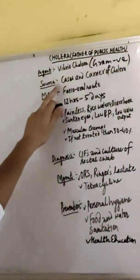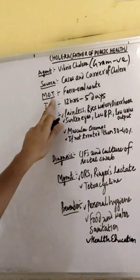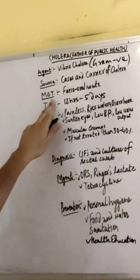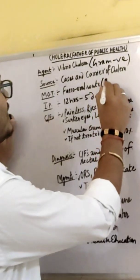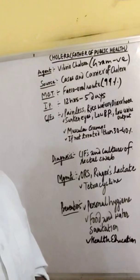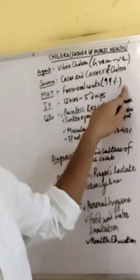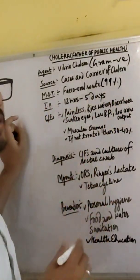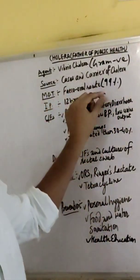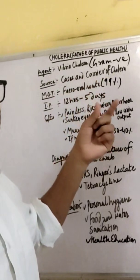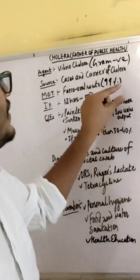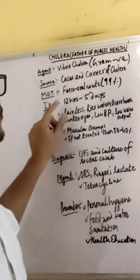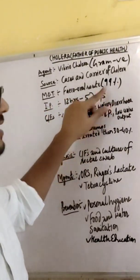The source is cases and carriers of Cholera. The main mode of transmission is the feco-oral route — more than 99% of cases occur via the feco-oral route. It is included in both waterborne and foodborne diseases, because it infects people through infected water as well as infected food.